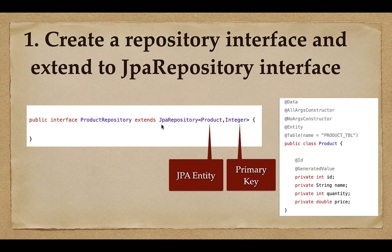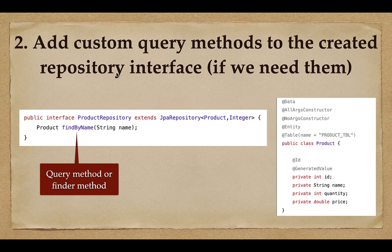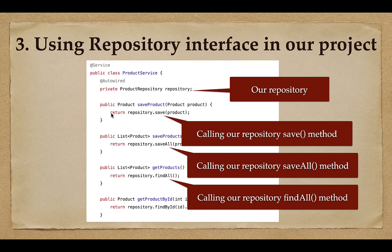We can also add custom query methods or finder methods to the repository interface — for example, findByName is a query method or finder method. We'll learn more about query methods and finder methods in upcoming lectures. This step is optional; you can add query methods or finder methods as per your requirements.